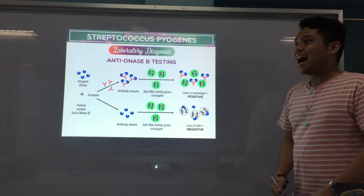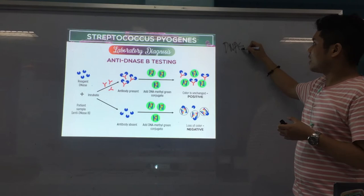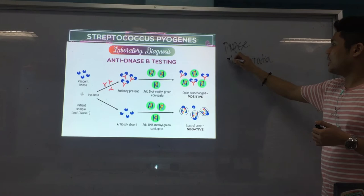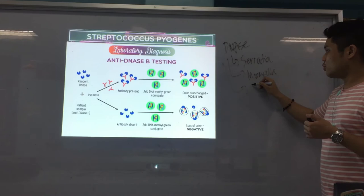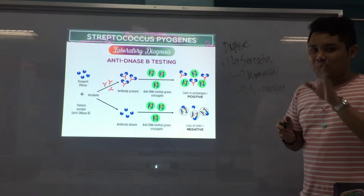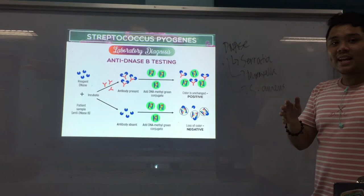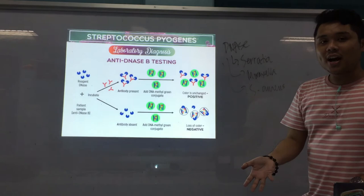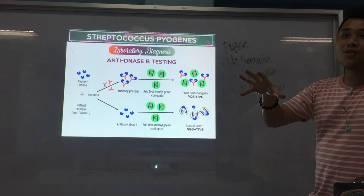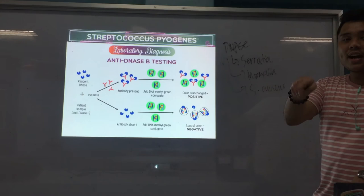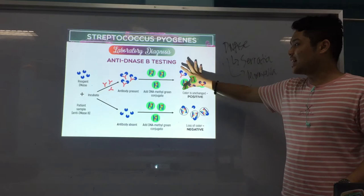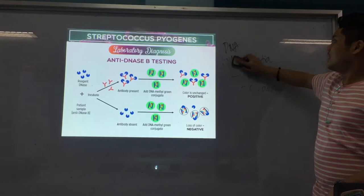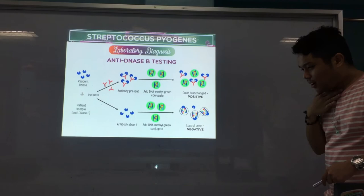If the patient doesn't have anti-DNase B antibodies, the DNase B reagent is free. When the DNA methyl green conjugate is added, the free DNase B depolymerizes the DNA and the color disappears — that indicates a negative result, meaning the patient has no anti-DNase B. The normal titer is 240 to 640 units for children 2 to 12 years old.